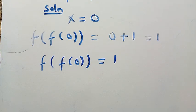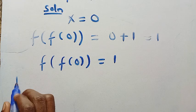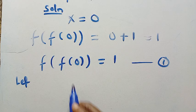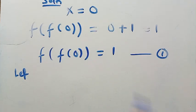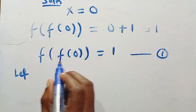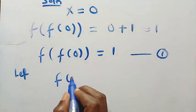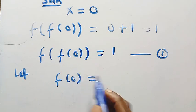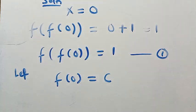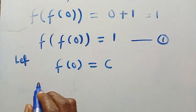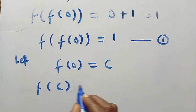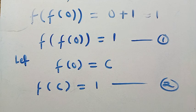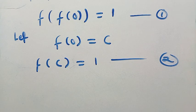Let's call that equation one. Now in equation one, this function is composite, so if I let f of zero equal c, then we are going to have f of c equals one. I will call this equation two.